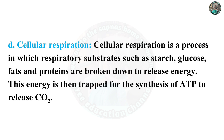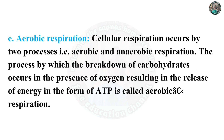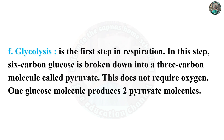This energy is then trapped for the synthesis of ATP, releasing CO2. E. Aerobic respiration: Cellular respiration occurs by two processes — aerobic and anaerobic respiration. The process by which the breakdown of carbohydrates occurs in the presence of oxygen, resulting in the release of energy in the form of ATP, is called aerobic respiration. F. Glycolysis: Glycolysis is the first step in respiration; glucose is broken down into three-carbon molecules called pyruvic acid. This does not require oxygen. One glucose molecule produces two pyruvic acid molecules.